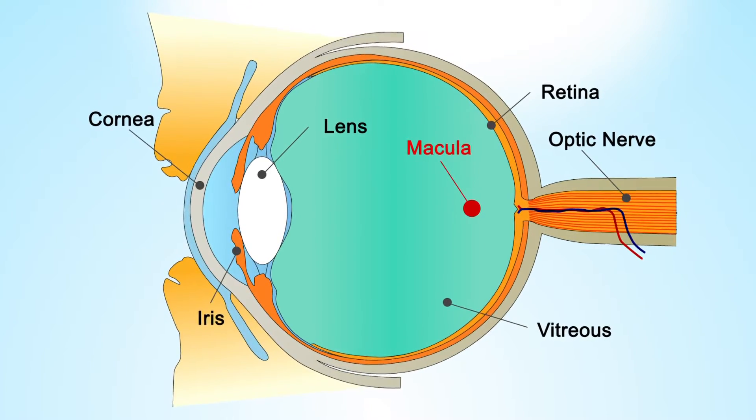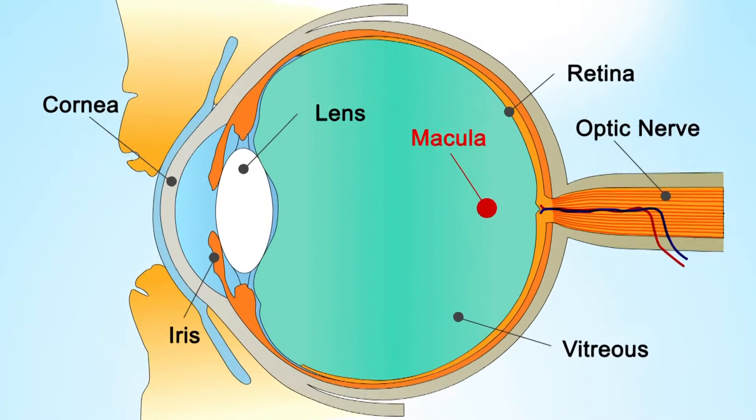Zeaxanthin is one of the natural pigments in the macula, which block blue light and thereby protect the eyesight.